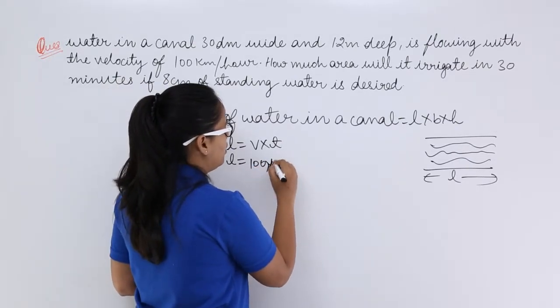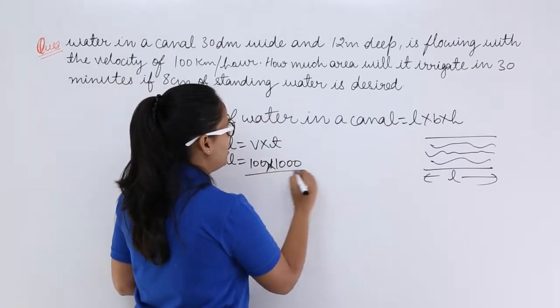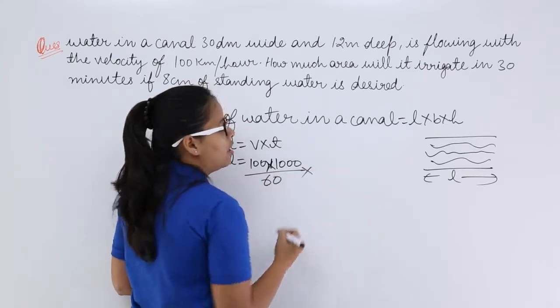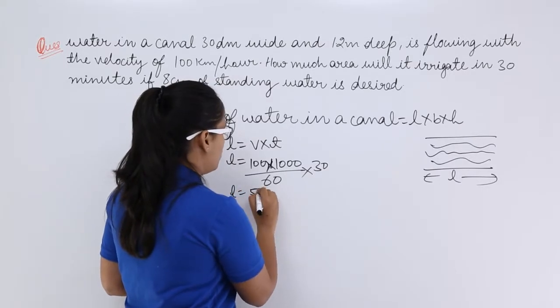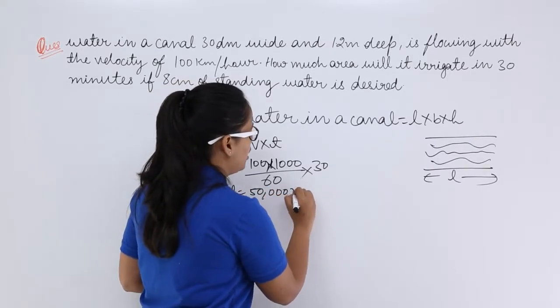So this is 100 into 1000 meters. In hours there are 60 minutes and 30 minutes. After evaluation you will get length as 50,000 meter.